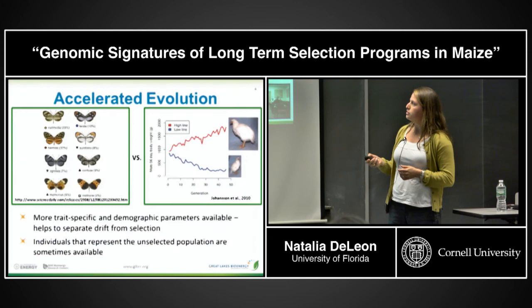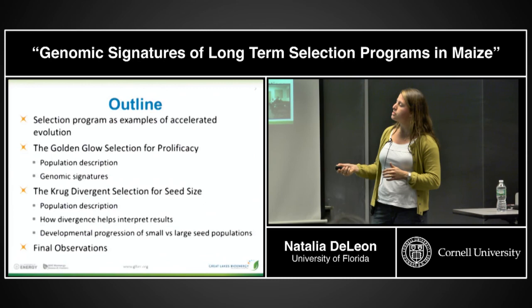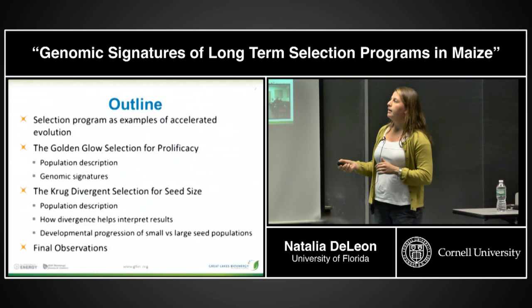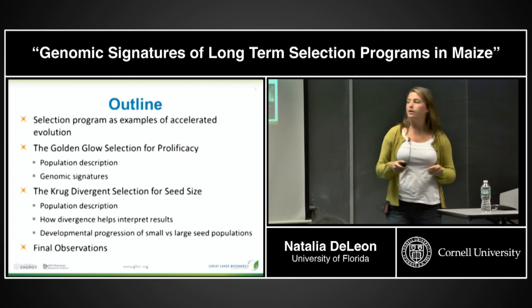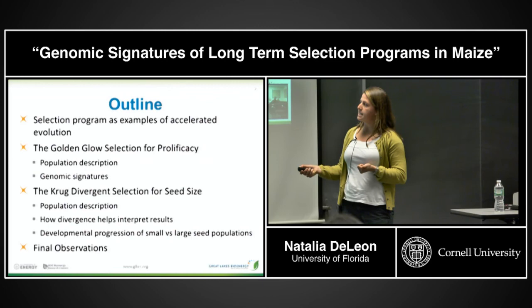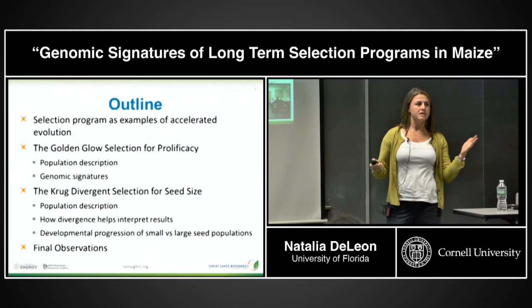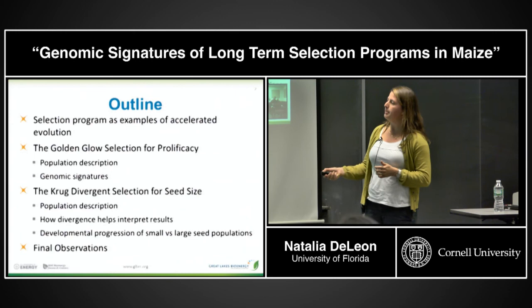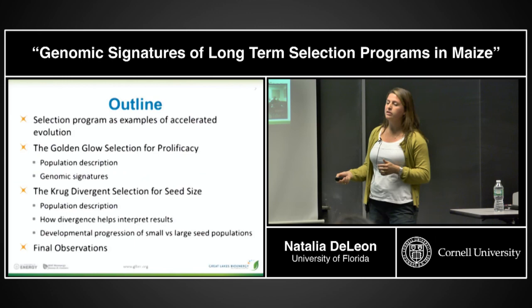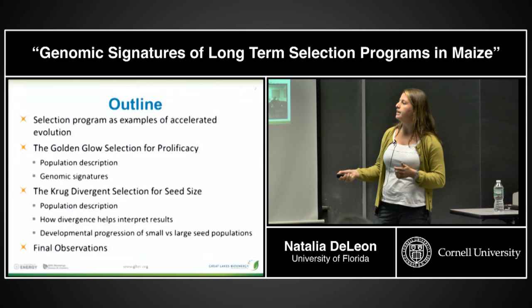I'm going to talk about two primary examples. First, a long-term selection population called Golden Glow, selected for 30 cycles for prolificacy — the number of ears per plant. Then I'll talk about a population selected in Nebraska called Krug Divergent Selection for Seed Size. The key word is divergent: Golden Glow was unidirectionally selected for increased ear number, while Krug was selected both for small and large seeded populations. Toward the end, I'll also discuss some biology around the physiological components that make seeds become small and large.